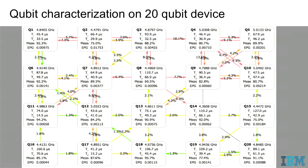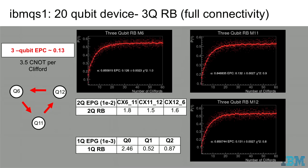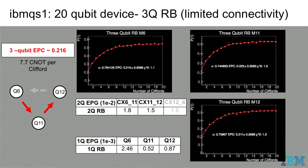On this 20-qubit device, we've also run a three-qubit RB. Using the two-qubit RB from the previous mapping, you would expect the error per Clifford to be a little lower. Probably by looking at two-qubit and single-qubit simultaneous RB, you could get a fairly appropriate number for the three-qubit error per Clifford. With different connectivity, the error per Clifford goes up.